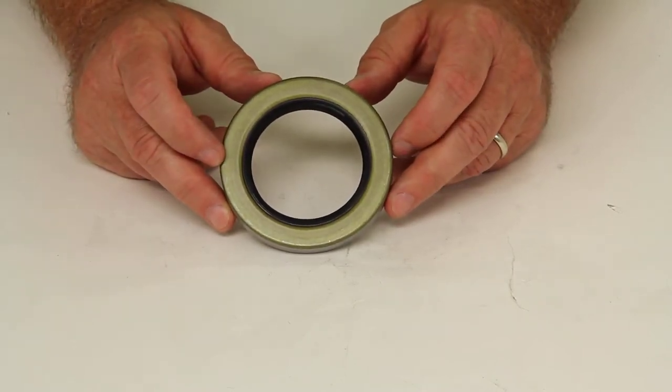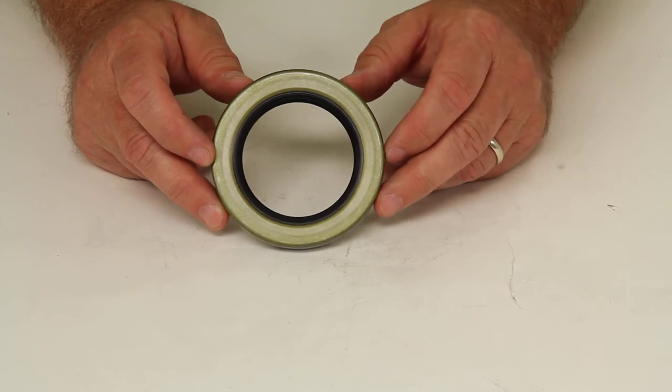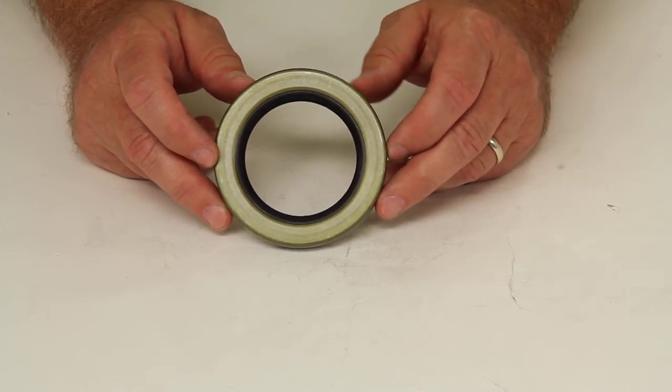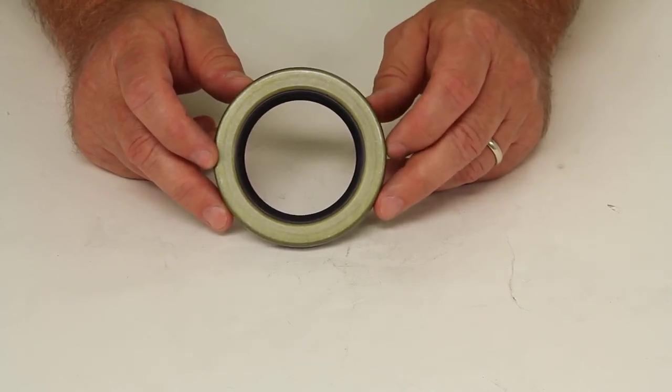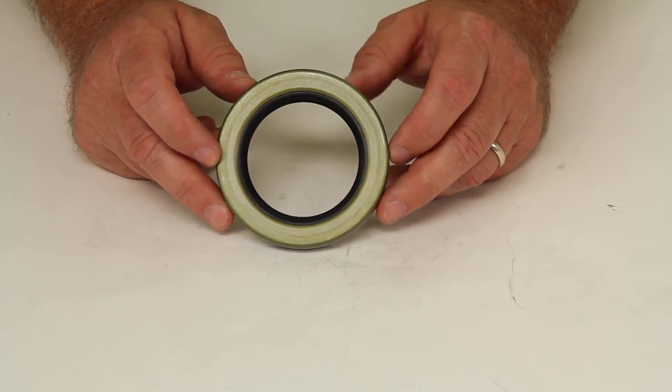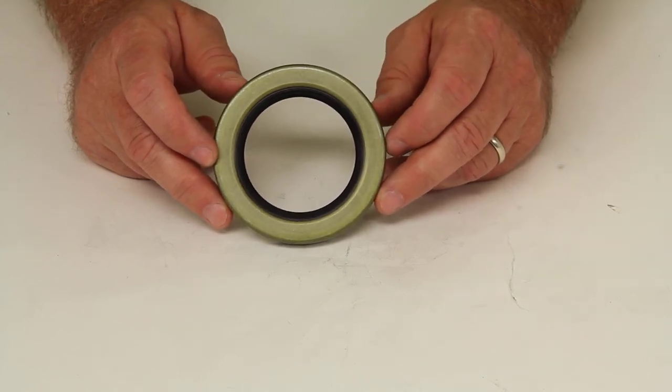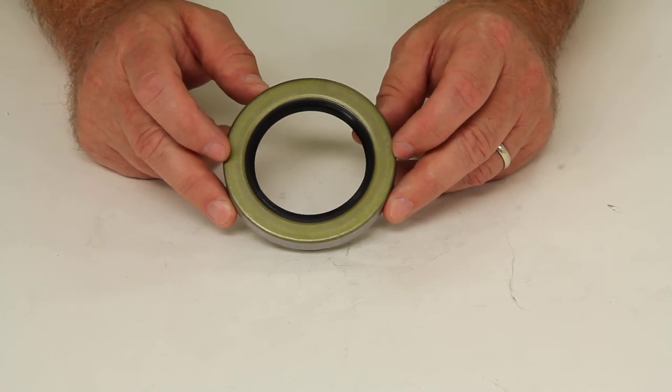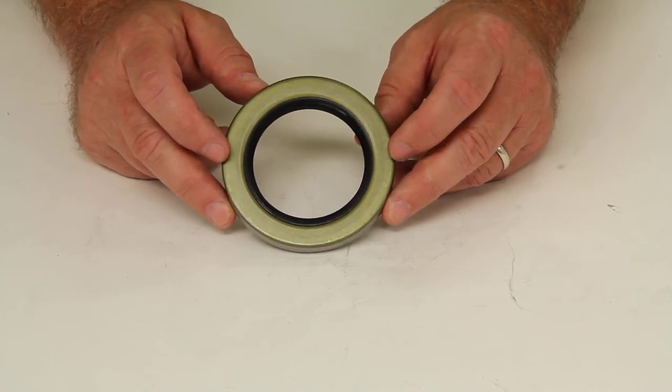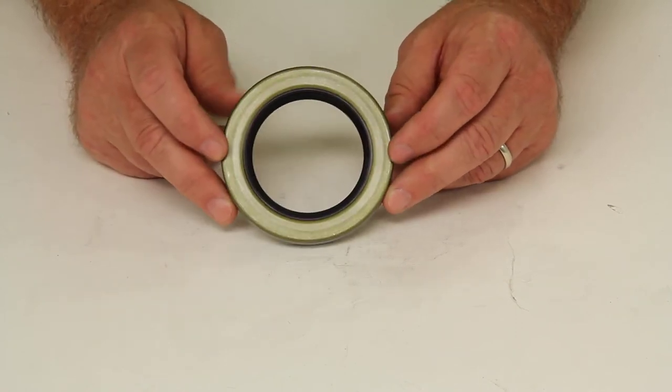They'll list a seal cross-reference chart, and what that will do is list the different brands that make oil seals and the part numbers for those specific brands. You can look on that chart, and if you have a different brand oil seal and it's listed there on this page, that would mean this oil seal would work in place of it.